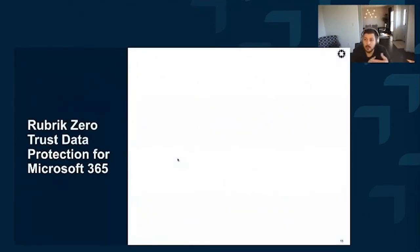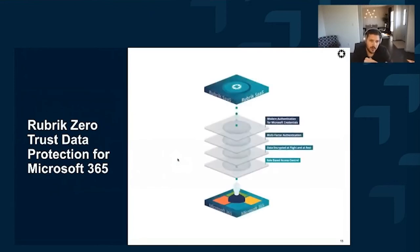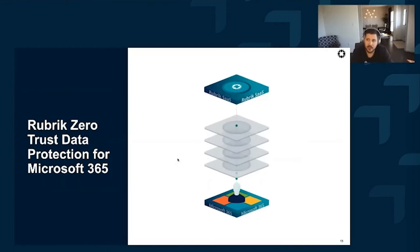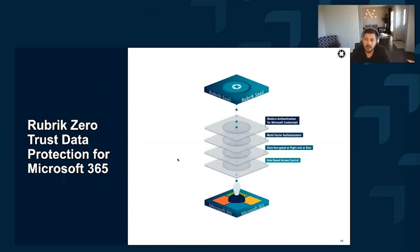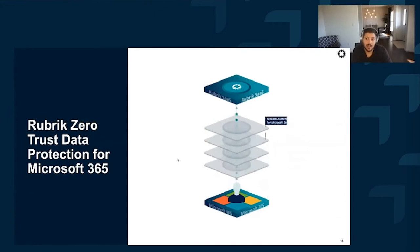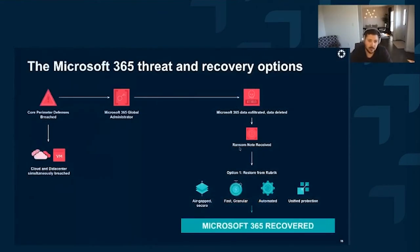So how does Rubrik come into play? The most important aspect is creating a logical air gap between your Microsoft environment and the backups stored in Rubrik. This is a full SaaS offering — we reach out to Microsoft 365, pull the data back into Rubrik, and have it fully segmented from your environment. If threat actors get those global admin credentials, they don't have access to your backups and can't delete them. Once you get the ransom note, if you have Rubrik in place, you're able to get that data back up and running since it's in a fully isolated cloud vault on the Rubrik side.